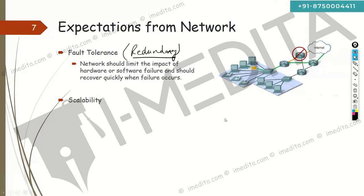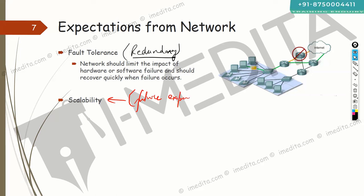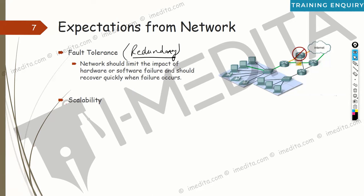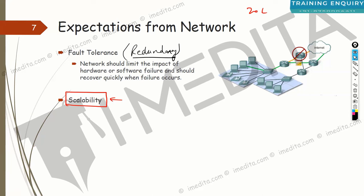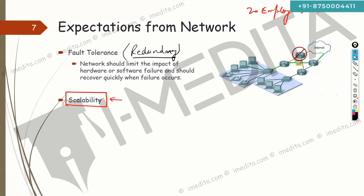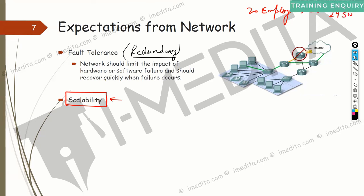The second expectation is scalability — the network should support future expansion. For example, if you give a 24-port switch to a 20-employee company with one port going to a router, they're left with just 3 ports for future use. The day more people are hired, there'll be a problem. Instead, you should have thought ahead and given a 48-port switch. Network should be able to expand quickly to support new users without impacting existing users.